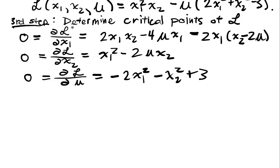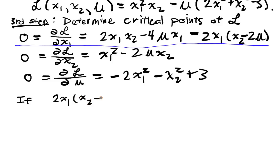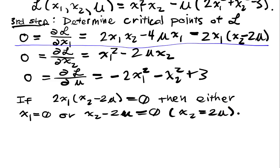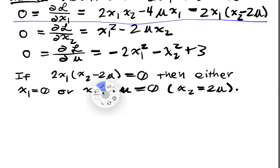This is a process of elimination to figure out what's going to happen. The first equation, 2x1(x2 minus 2μ) equals 0, is a product of two factors. So either x1 equals 0, or x2 minus 2μ equals 0, which is the same as x2 equals 2μ. We have to check both of these potential outcomes, since in both cases the first constraint is satisfied, and the second and third equations will change accordingly.